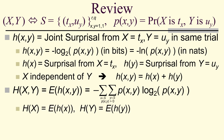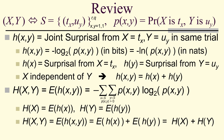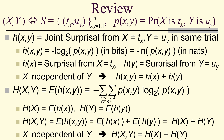The entropy of variable x is the expected value of h of x. The entropy of variable y is the expected value of h of y. The joint entropy is the expected value of the joint surprisal, which, if they're independent, equals the expected value of the sum — the sum of the expected values — meaning the sum of the individual entropies. In other words, if x is independent of y, the joint entropy is the sum of the individual entropies.